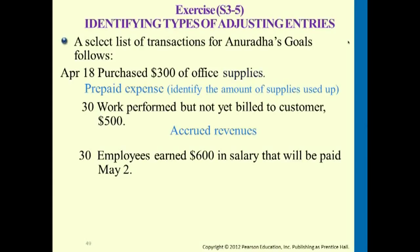The last one: employees earn $600 in salary that will be paid later on May 2nd. When it reaches April 30th, we want to record this $600 under salary expense. That's an accrued expense — a type of liability. Later on, the actual cash payment will be made when it reaches May 2nd.